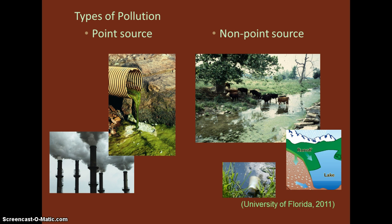There are two broad types of pollution discussed in water science: point source pollution and non-point source pollution. Point source pollution is defined by the U.S. Environmental Protection Agency, or EPA, as any single identifiable source of pollution from which pollutants are discharged, such as a pipe. Examples of point sources include discharges from wastewater treatment plants, operational wastes from industries, and combined sewer outfalls. State and federal requirements have largely eliminated this type of pollution.